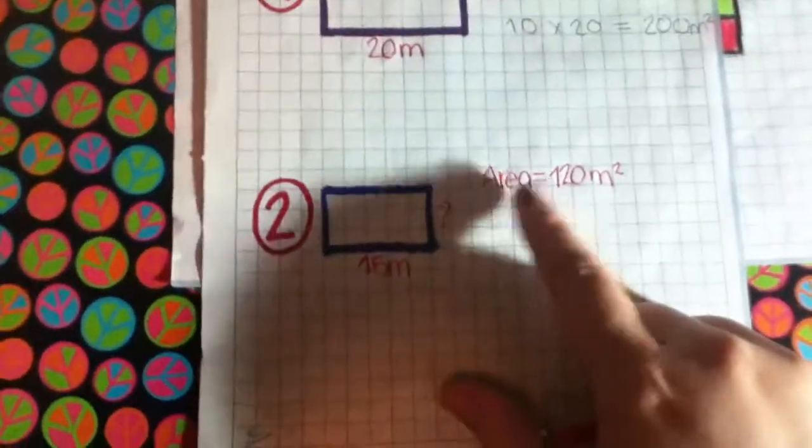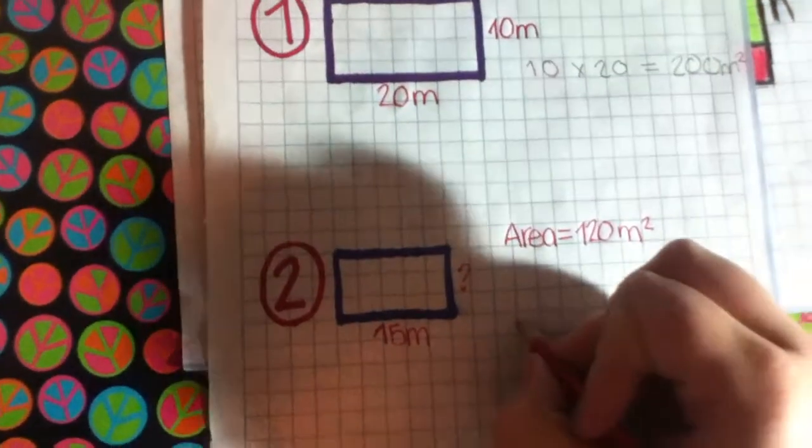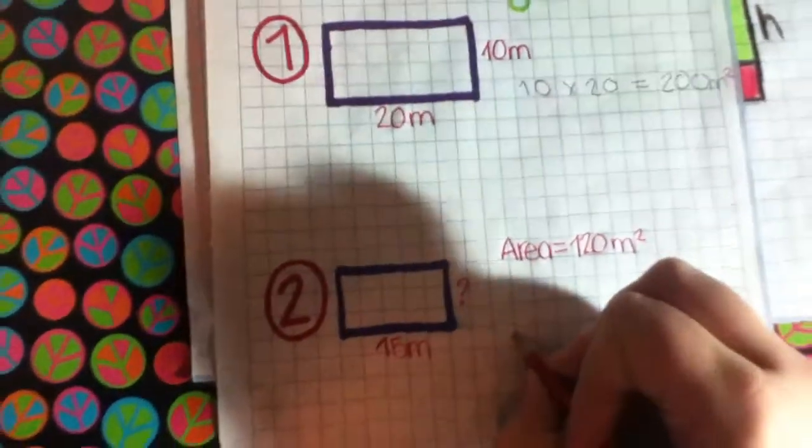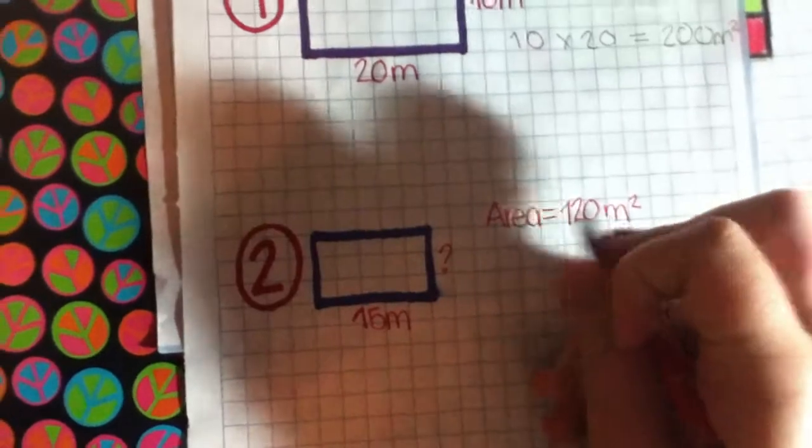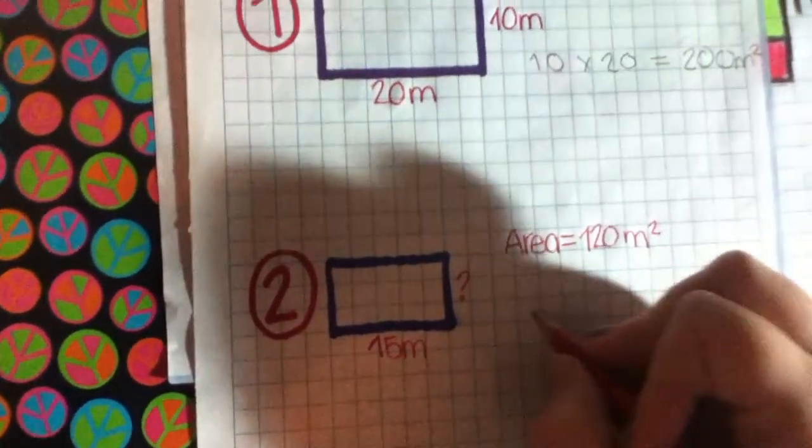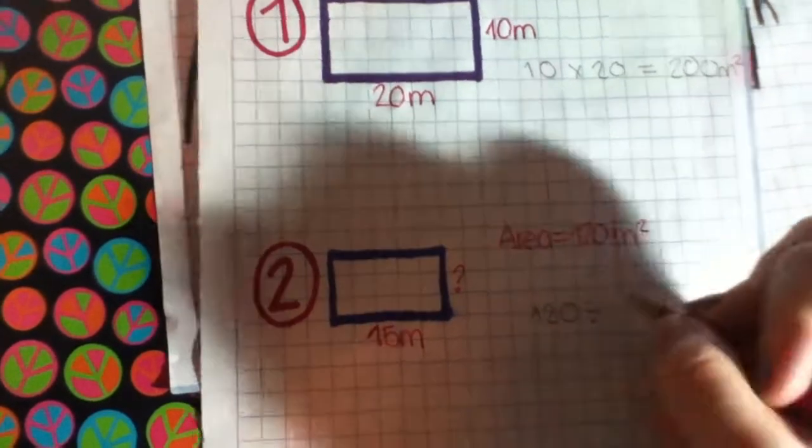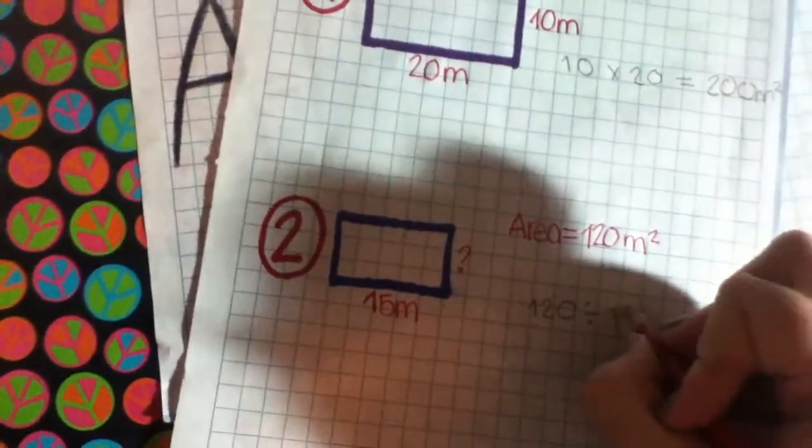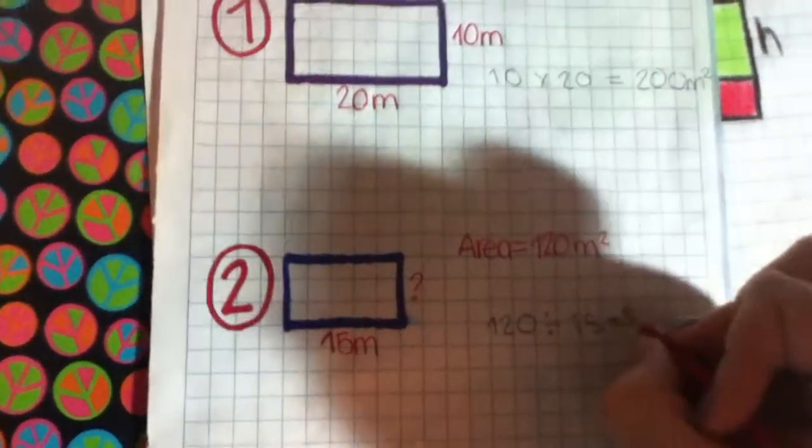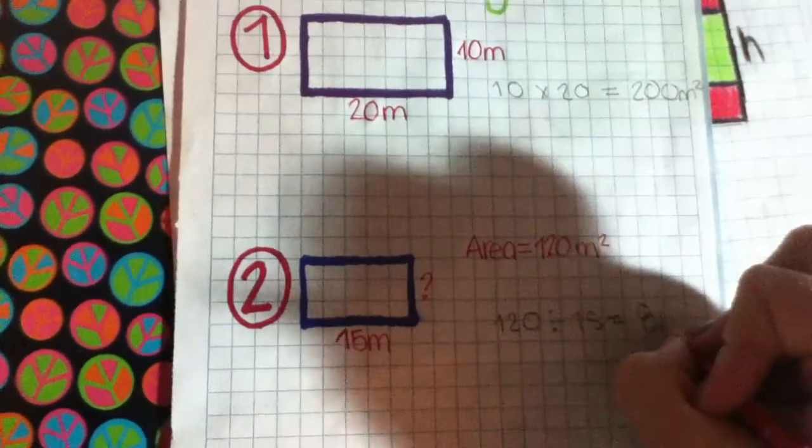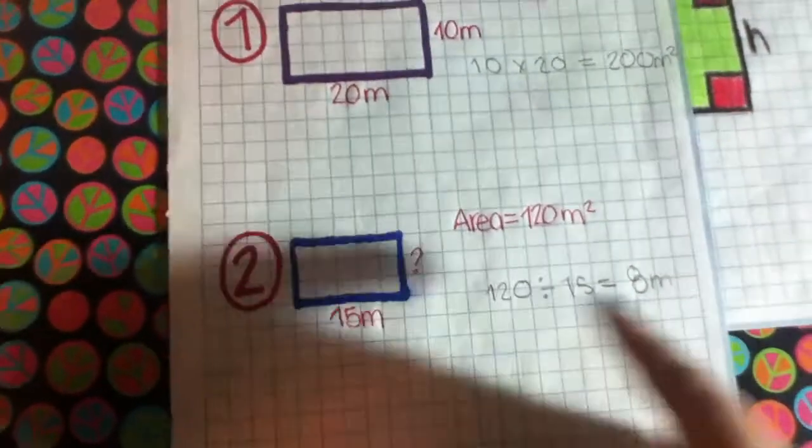And now we have the area, but we don't have a side. So what we need to do is the opposite of the formula. We need to divide this by this. And this gives us an answer, 8. So the measurement of this side is 8 meters.